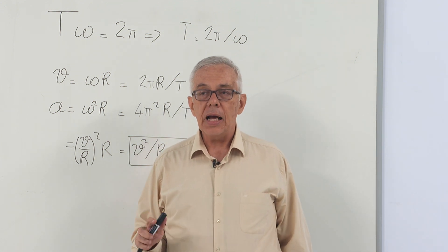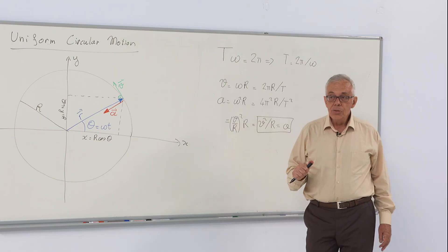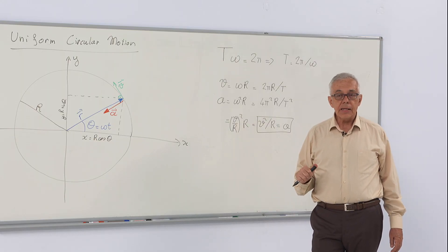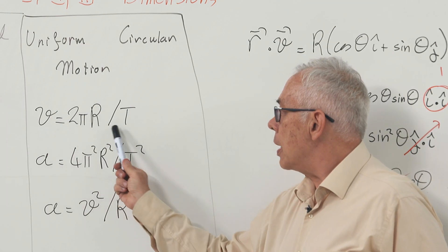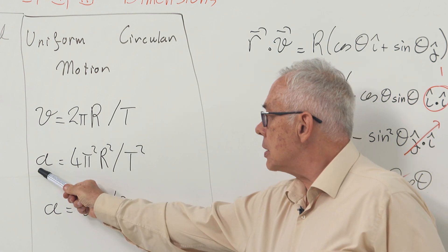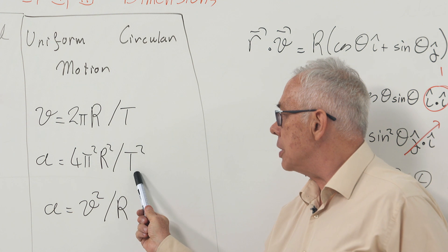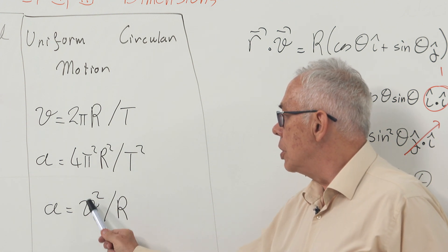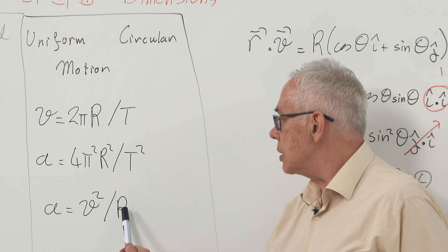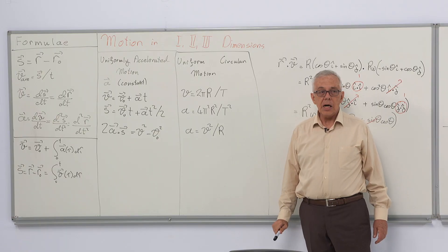Please note that this is the centripetal acceleration, and it equals v squared over r. There is no such thing as centrifugal acceleration, nor is there anything called centrifugal force. So the key formulas are: speed equals 2 pi r over period; acceleration magnitude equals 4 pi squared r squared over period squared; and acceleration equals v squared over r.